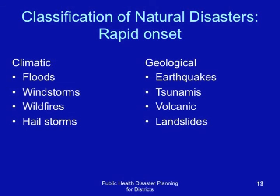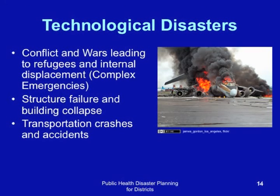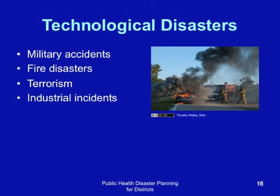Technological disasters are often man-made. They result from activities or omissions by human beings. They include conflict, wars leading to refugees and internal displacement — these are often called complex emergencies. Technological disasters also include structure failure, building collapse, transportation crashes, and accidents both on water and on roads, as well as other types of accidents like chemical explosions and factory explosions. They also include military accidents, fire disasters, terrorism, and industrial accidents.